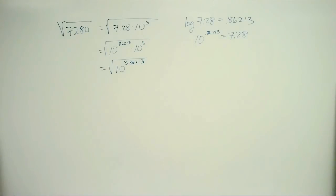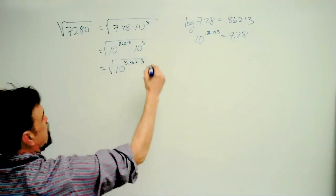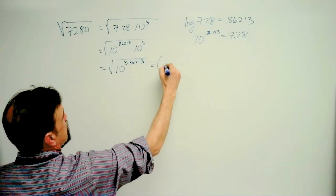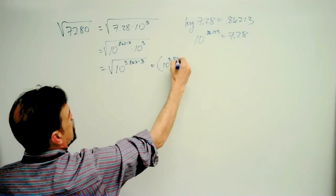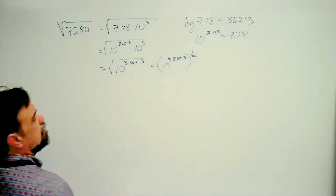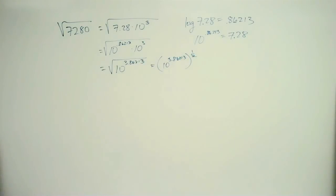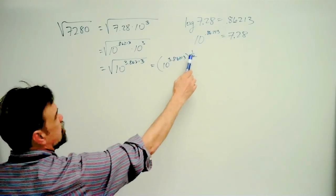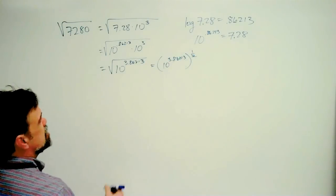All right. Well, what does square root mean? It means to the 1 half power. Okay, and now that I have that to the 1 half power, what am I going to do with these exponents? I multiply those exponents.